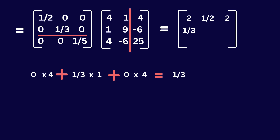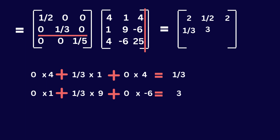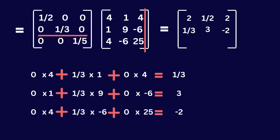Consider the second row of the first matrix and the second column of the second matrix: 0 multiplied by 1 is 0, 1 over 3 multiplied by 9 is 3, and 0 multiplied by minus 6 gives 3 overall — I will put 3 here. Then consider the second row of the first matrix and the third column: 0 multiplied by 4 is 0, 1 over 3 multiplied by minus 6 is minus 2, and 0 multiplied by 25 is 0, so the overall answer is minus 2 — I will put minus 2 here.